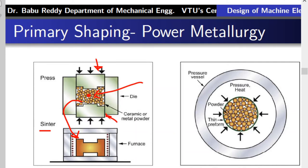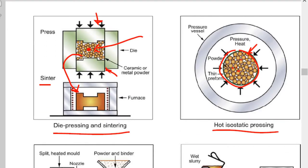In hot isostatic pressing, powder is taken in a thin preform and heated and compressed by an external gas pressure. Isostatic means equal pressure in all directions. The powder inside the preform is compressed uniformly into a spherical structure, then taken out and heated in a furnace to get the required shape.